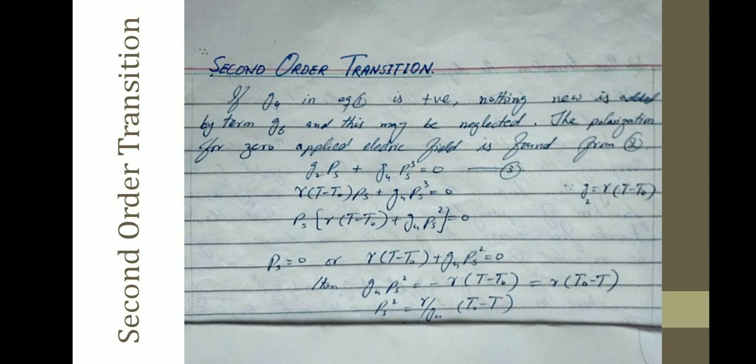With G₂ = γ(T - T₀), substituting into the equation gives: γ(T - T₀)Pₛ + G₄Pₛ³ = 0. Taking Pₛ common: Pₛ = 0, or γ(T - T₀) + G₄Pₛ² = 0. Then Pₛ² = γ(T₀ - T)/G₄. There are two cases: if T ≥ T₀, the only real root is Pₛ = 0 when γ and G₄ are positive.